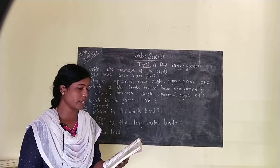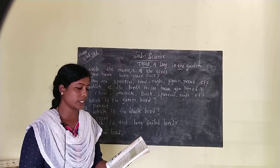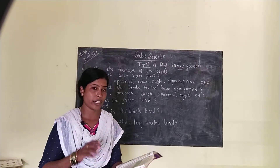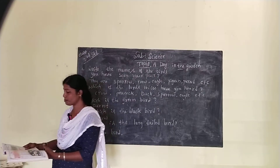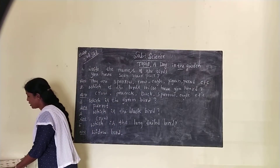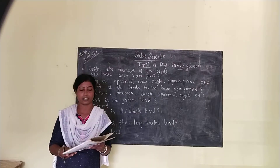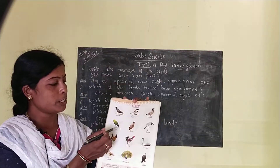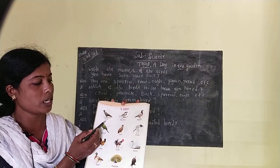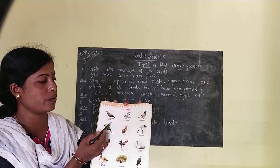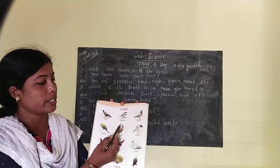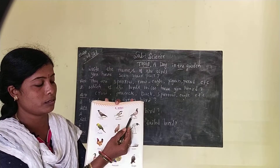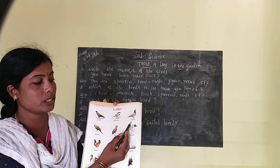Aruna said: 'The chirping of birds is very melodious to listen to, isn't it?' Yes, bird sound is very melodious. I will show you some bird pictures — look here. Which bird is this? Crow — C-R-O-W, crow. Which bird is this? Sparrow — S-P-A-R-R-O-W, sparrow. Which bird is this? This is pigeon, P-I-G-E-O-N, pigeon.